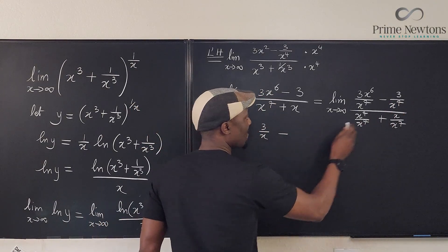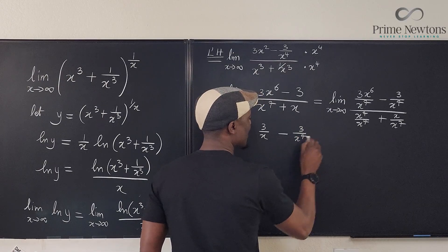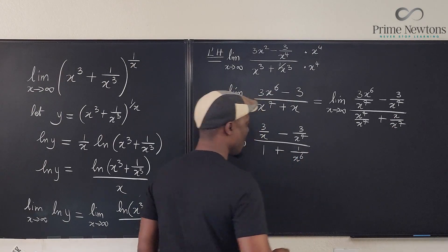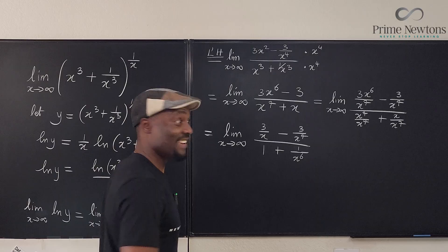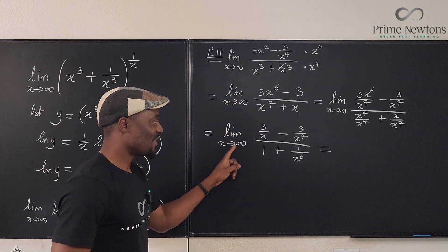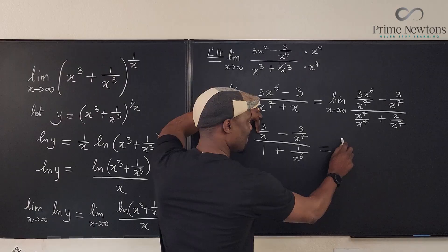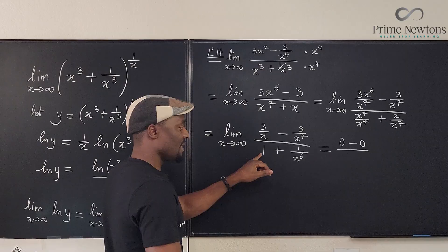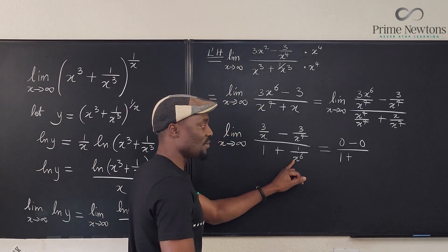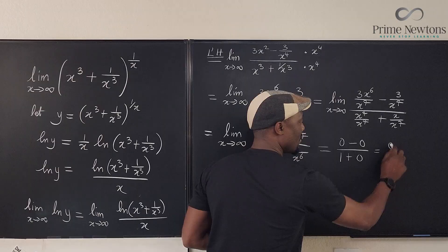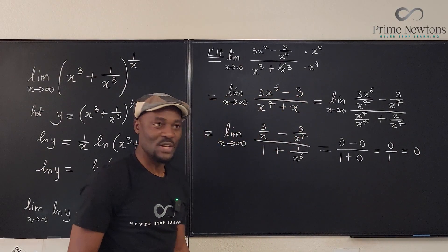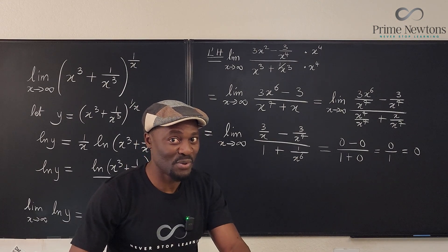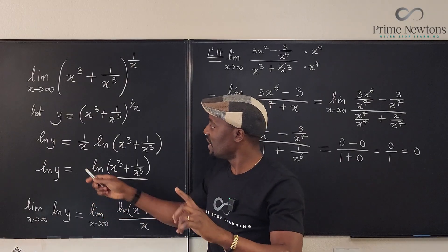Taking the limit now: as x goes to infinity, 3 over x goes to 0, and 3 over x to the seventh goes to 0. The denominator gives 1 plus 0, which is 1. So we have 0 over 1, which equals 0. The limit on the right-hand side is 0. But this is not the final answer — remember that on the left-hand side we took the limit of the natural log of y, not the limit of y itself.